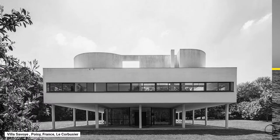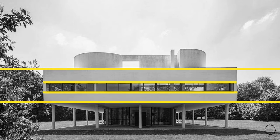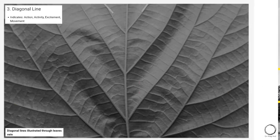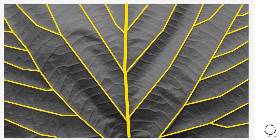Horizontal lines are illustrated through a horizon and applied to the building Villa Savoye by Le Corbusier. Next is the diagonal line, which indicates action, activity, excitement, and movement, illustrated through leaf veins.